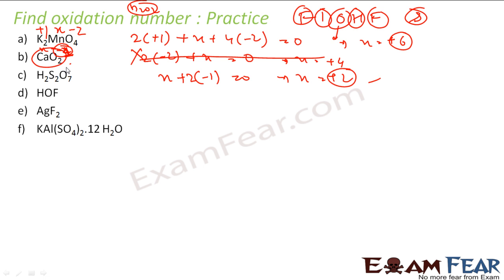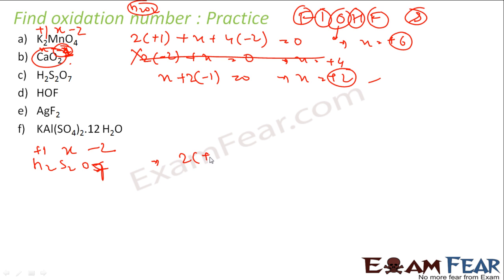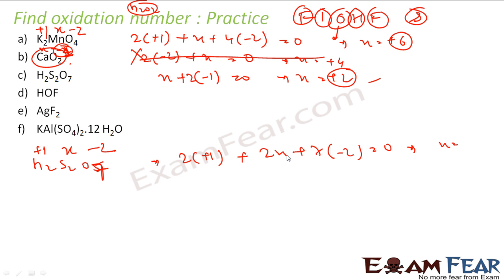Now H₂S₂O₇. Not a free element, not an ion. Oxygen is minus 2, hydrogen is plus 1. Sulfur is the only unknown x. Sum rule: 2 times hydrogen plus 1, plus 2x for sulfur, plus 7 times oxygen minus 2, equals 0. Solving gives x equals plus 6. So sulfur is plus 6.